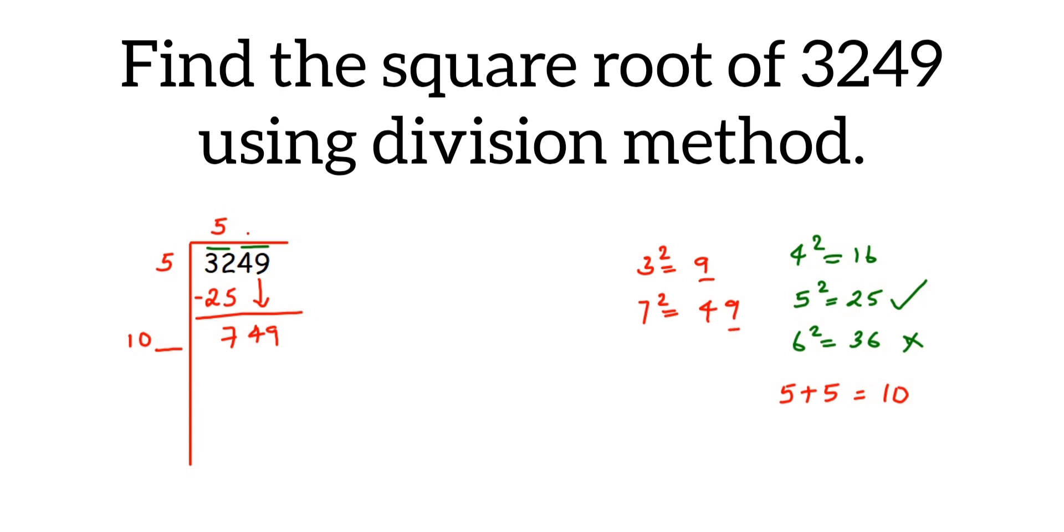First we'll try with 3. 103 times 3, let's see what we get. 103 times 3: 3×3 is 9, 3×0 is 0, 3×1 is 3, so 309. This is not the number.